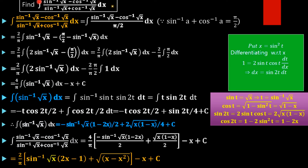In summary: we applied the inverse trigonometric property sin inverse a plus cos inverse a equals pi by 2, then substituted x equal to sin squared t to evaluate the integral, used integration by parts, and finally substituted back in terms of x to obtain the final result.